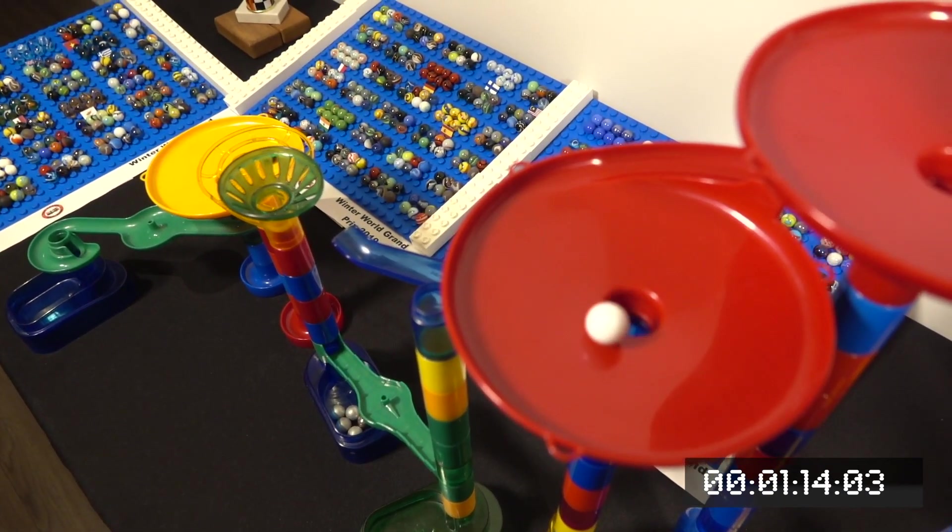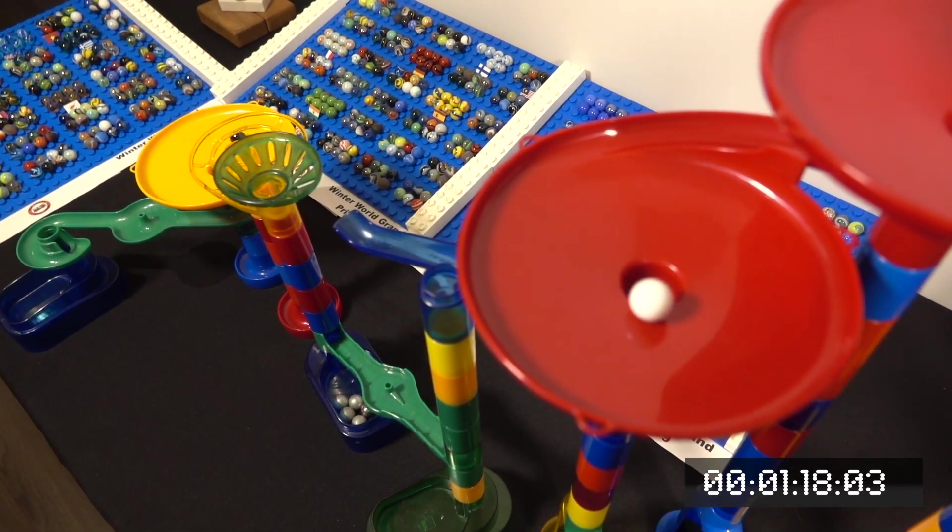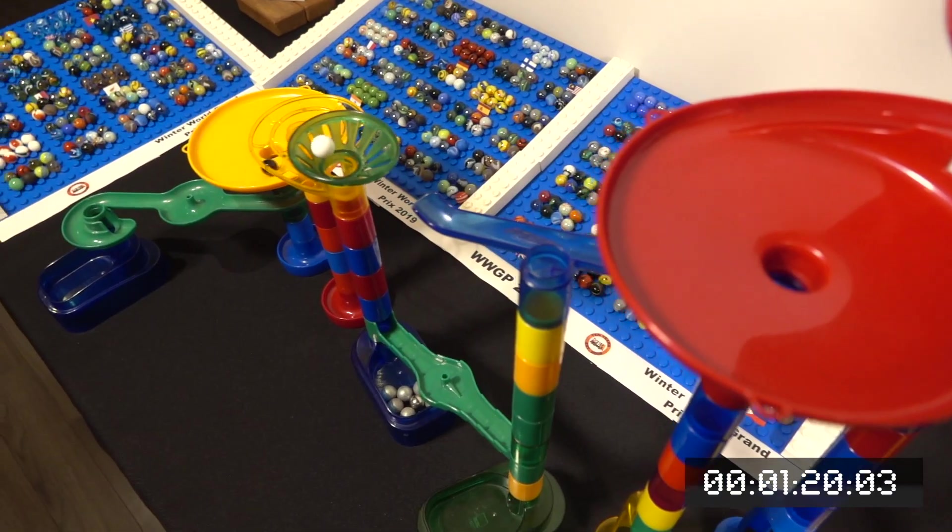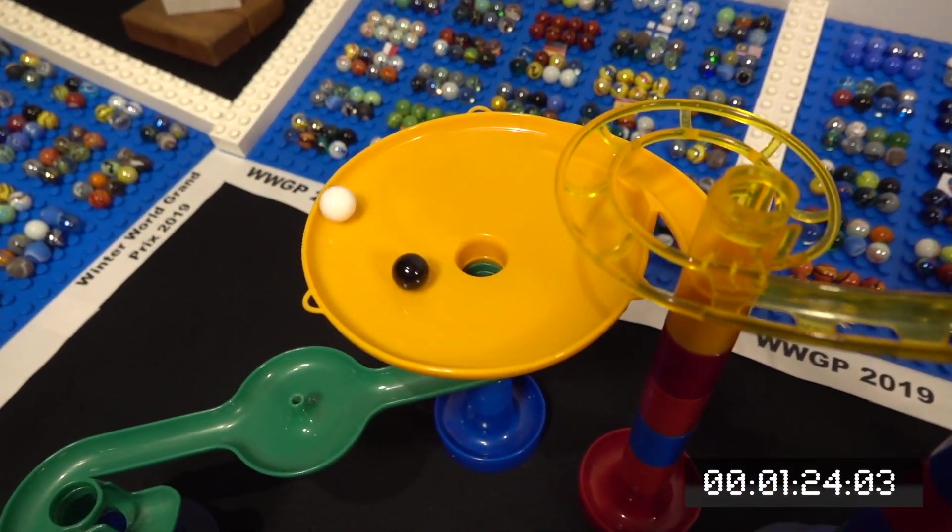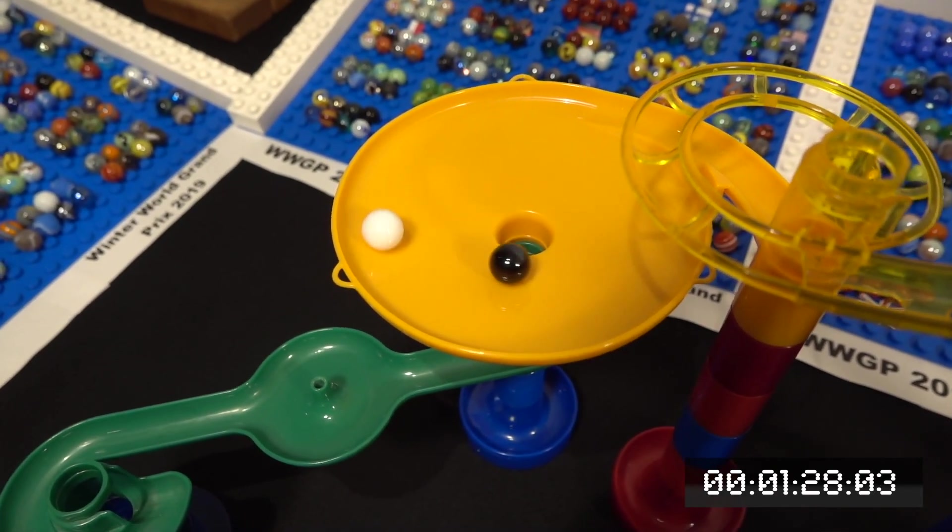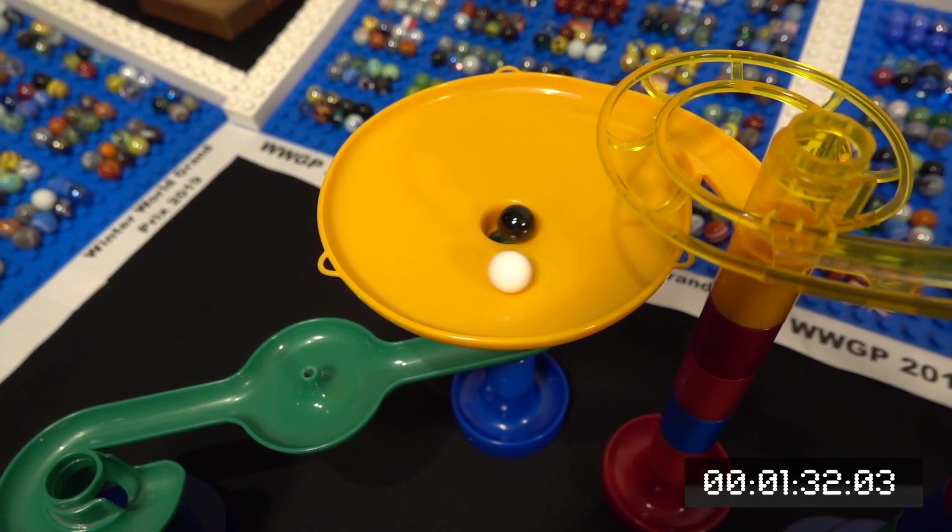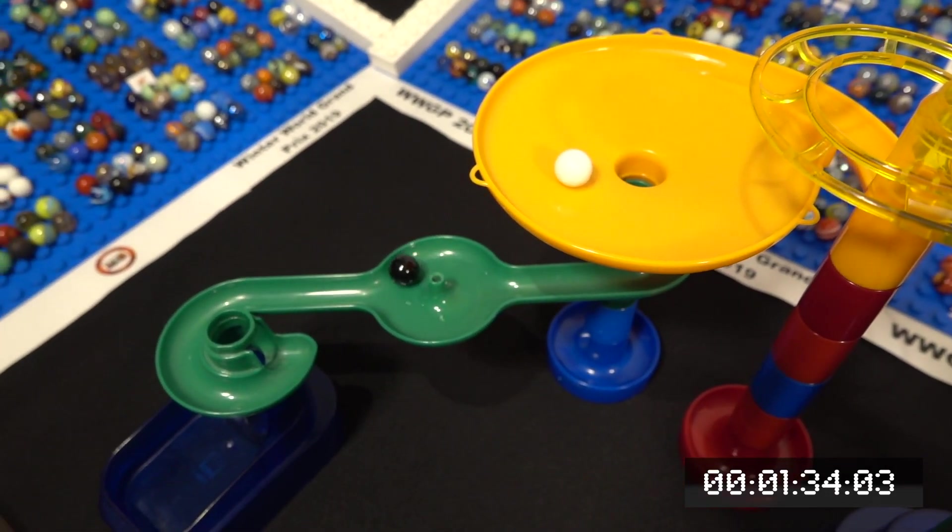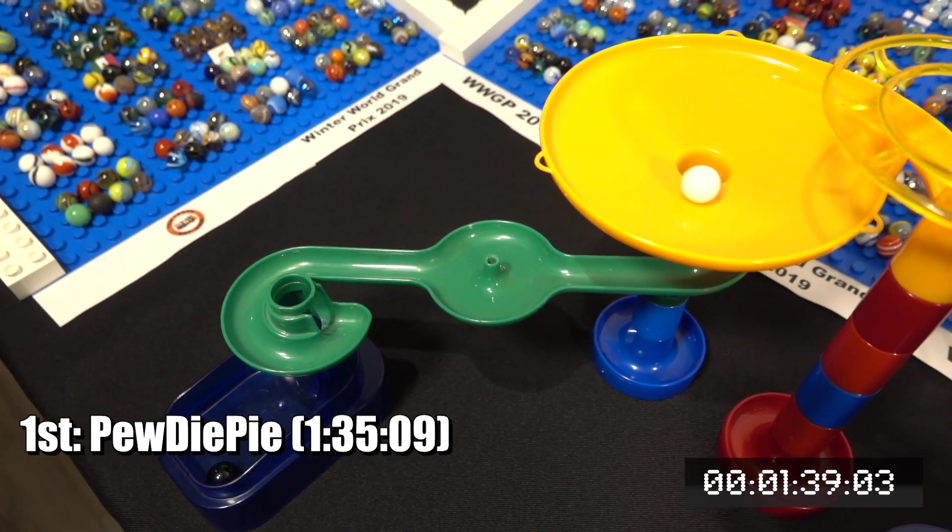Ooh, PewDiePie does exactly what T-Series did in fall number one, and this gives him a good lead to the final stretch, the most important part of the race. T-Series struggling to make it down that funnel and finally going down that ramp, down the spiral, and joining the final stretch. But unfortunately, PewDiePie is halfway through that funnel and I think it's too late for him. He's still trying to find an opening though, and unfortunately he was just too late to the party. PewDiePie finishes with a time of one minute and 35 seconds.